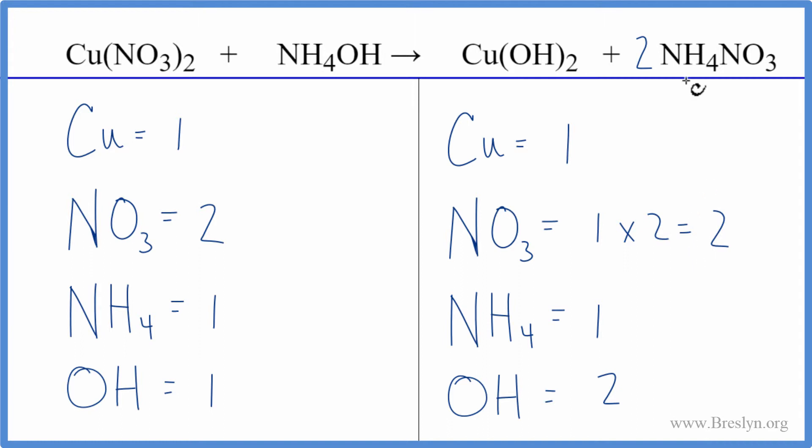Let's balance the ammonium next. That should balance the hydroxide as well. We have two here and one here. Put a coefficient of two in front of the ammonium hydroxide. One ammonium times two gives us two, so these are balanced. One hydroxide times two—now the hydroxides are balanced and we're done. This equation is balanced.